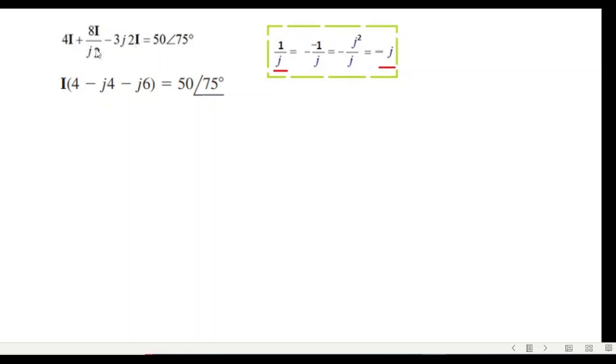8 divided by 2 is 4. 1 over j minus j, I'm going to further simplify. 50 angle 75 degrees divided by 4 minus j10. I'm going to convert into polar form, because for division we convert into polar form.